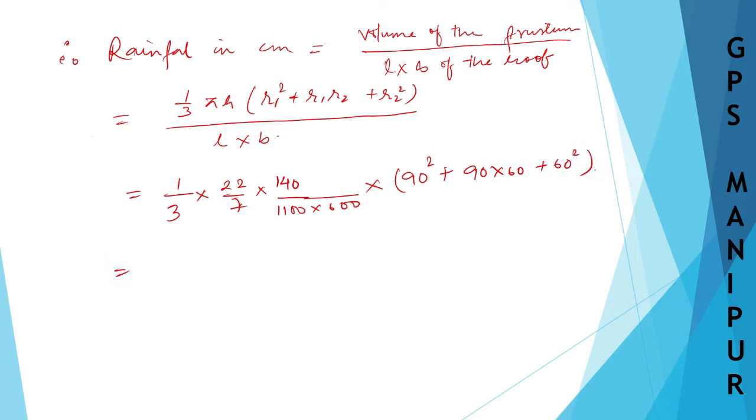Now let me do the calculation. So 7 into 140 is 20 here. And 1/3 × 22 × 20, 11 × 600, it is 6, 6, 1, 2, 3, 4.